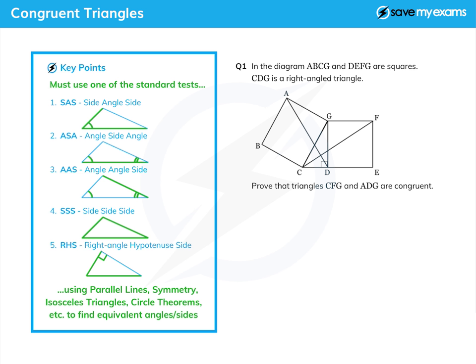So bottom line, if you can show that there is a pair of sides the same in the two triangles and any two other things, you're there.